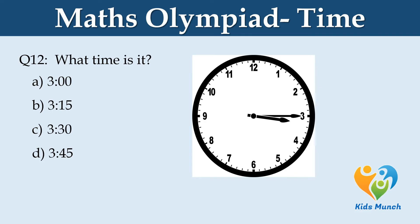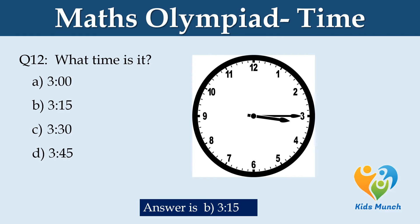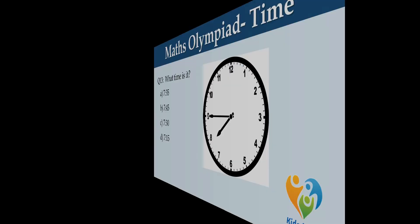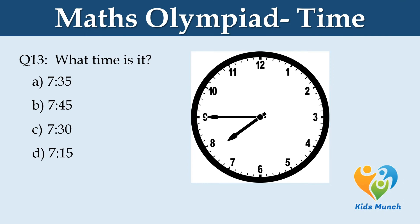What time is it? Option A: 3 o'clock. Option B: 3:15. Option C: 3:30. Option D: 3:45. What time is it? Option A: 7:35. Option B: 7:45. Option C: 7:30. Option D: 7:15.